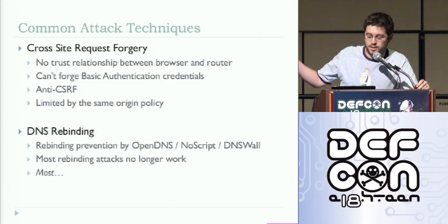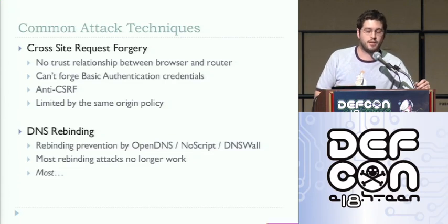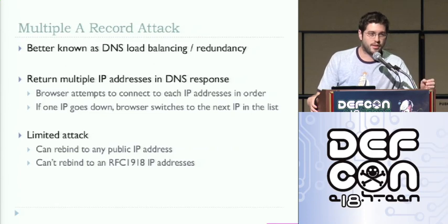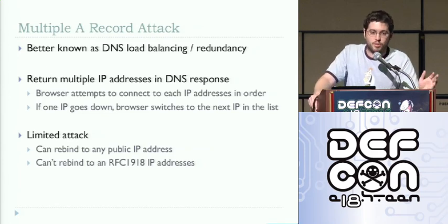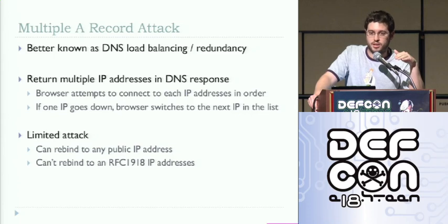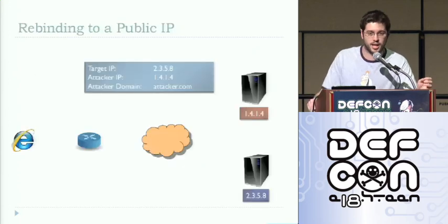Services like OpenDNS, NoScript, and DNSWall protect your internal network by blocking any external domain that resolves to an internal IP address. There are a couple of ways to do DNS rebinding, but my favorite — and I think the slickest — is better known as DNS load balancing. If you do a DNS lookup on Google, you don't get one IP address back, you get five. If you're on one IP and it suddenly goes down, your browser automatically switches to the next one for redundancy. But if we try to use this in a rebinding attack, we find we can't use it to rebind to an internal IP address directly.